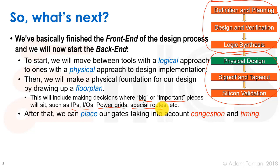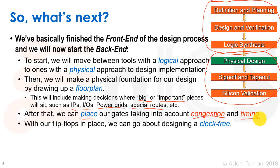After that we can place our gates. When we say placement, we're talking about placing the whole sea of standard cells — all the lego pieces like AND gates and NAND gates — in a big box. We have to take into consideration two things: congestion and timing. When we finish placement, we know where our flip-flops and clocked elements are, so we can then go and build a clock tree to distribute the clock to every part of the design.